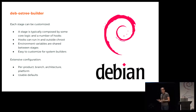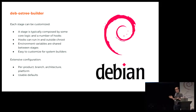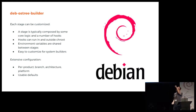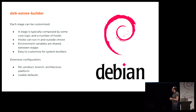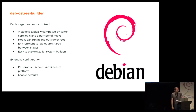The configuration of how all these things are put together is separate in the codebase. It has usable defaults, but you can customize it per product — the top-level configuration. For instance, I could build a Debian Stretch OSTree product and a Debian SID OSTree product. Those would be different products because they have different packages. There can be branches per different versions, per architecture, per platform.